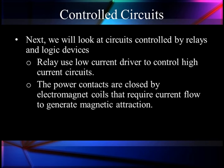We have two different circuits. We've got power contacts - the mechanical electrical contacts, or points, that close to energize the circuit. These points are closed by the electromagnetic coils that require current flow to generate the magnetic attraction to close up the power contacts.